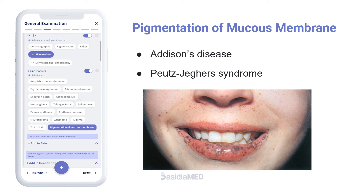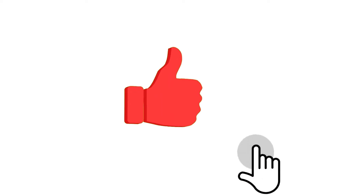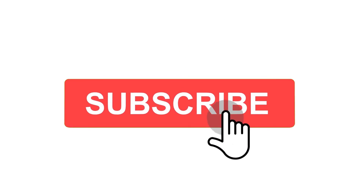Pigmentation of the mucous membrane of the oral cavity may be seen in Addison's disease and also in Peutz-Jeghers syndrome.